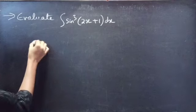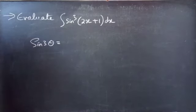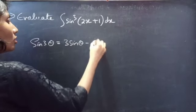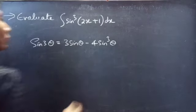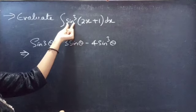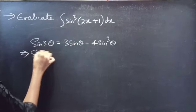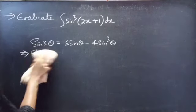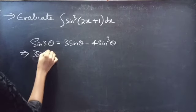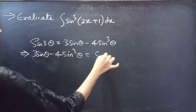We know that sin 3θ equals 3 sin θ minus 4 sin³θ. We need the sin³θ formula. So what we will do is write the identity as: 3 sin θ minus 4 sin³θ equals sin 3θ.